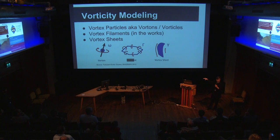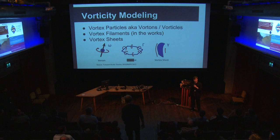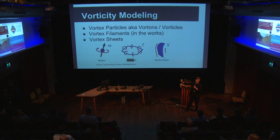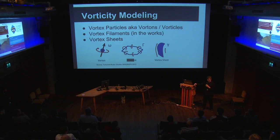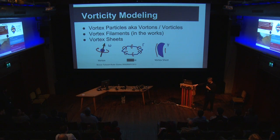Vortex particles work on the idea that a particle induces a curly motion into the smoke at the place where the particle is. Usually the smoke simulation is not high-resolution enough to capture things like flow over a surface — when smoke reaches an edge there should be vorticity, but due to low resolution there usually isn't. With vortex particles, you could create an emitter at the edge, and it will create the curly motion of the smoke after it reaches the edge.